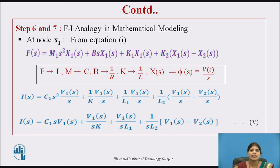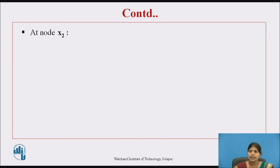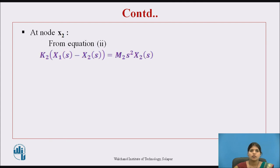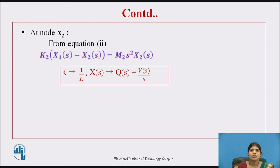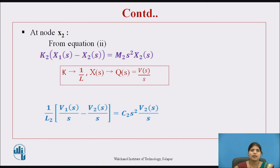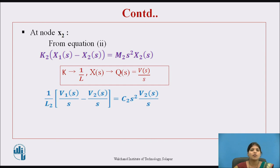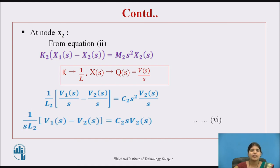At node X2, from Equation 2, replacing K by 1/L and X(S) by V(S)/S, the equation becomes: (1/L2)·(V1(S)/S − V2(S)/S) = C2·S²·V2(S)/S. After simplification, we get Equation 6, the equation in terms of current at node X2.